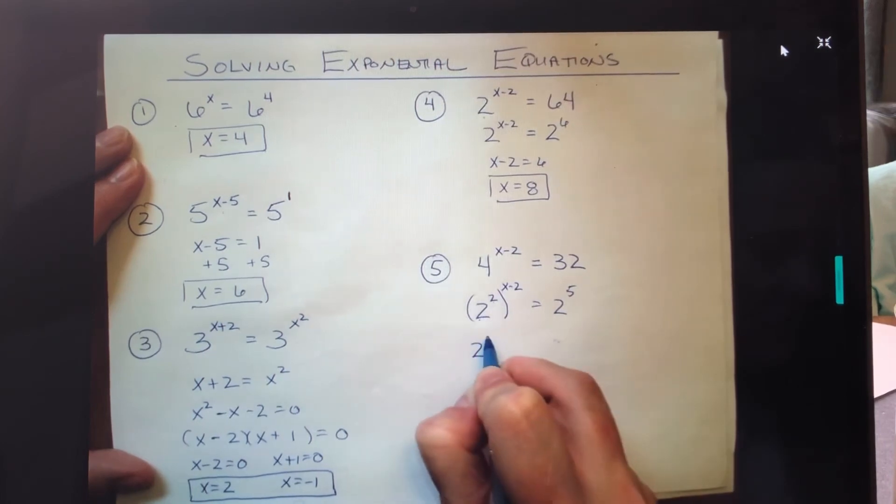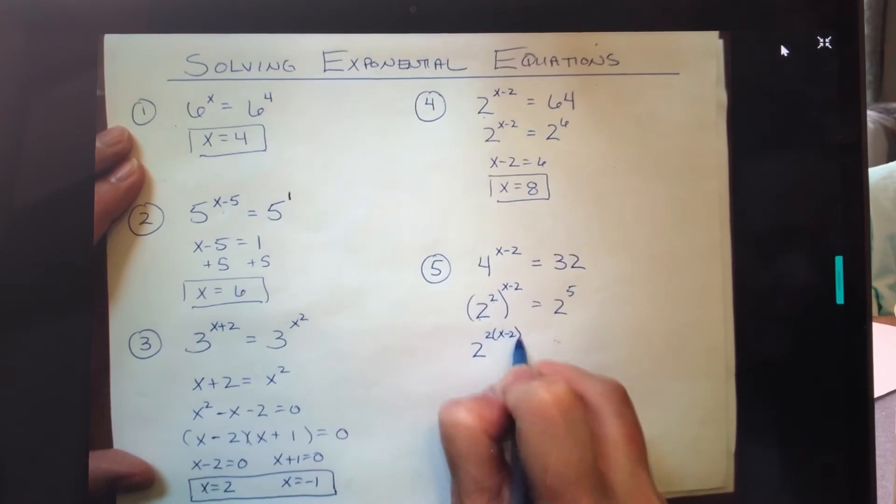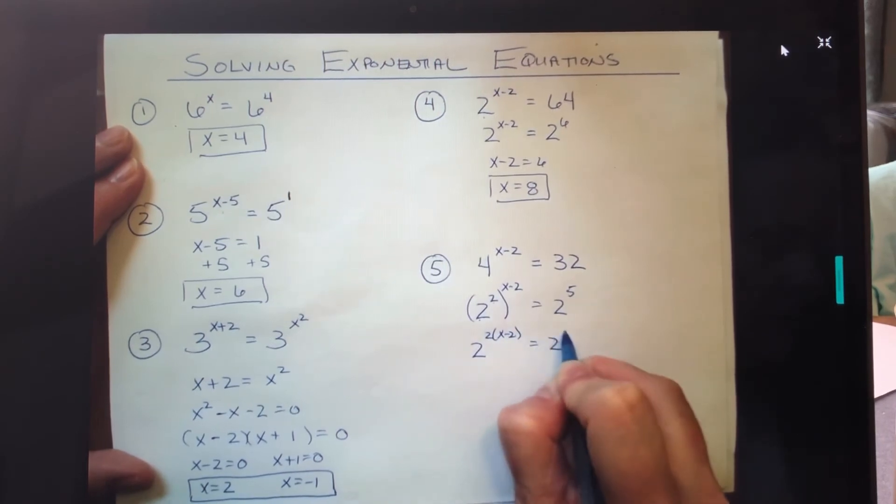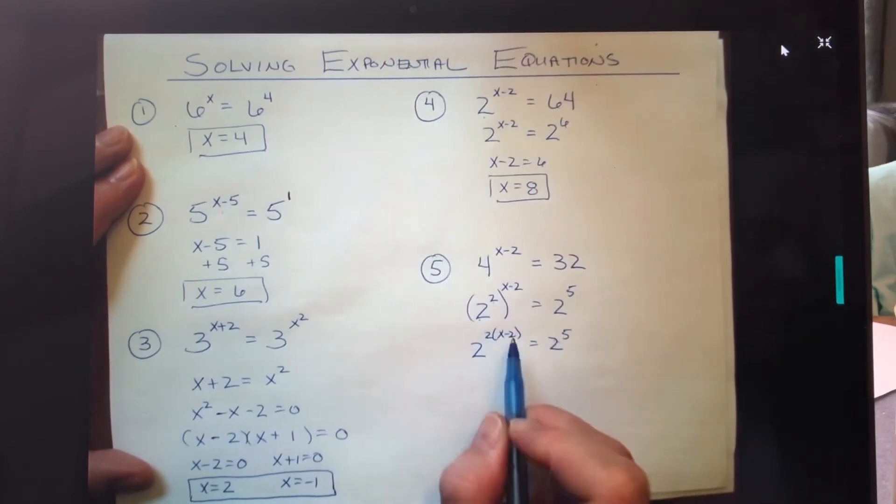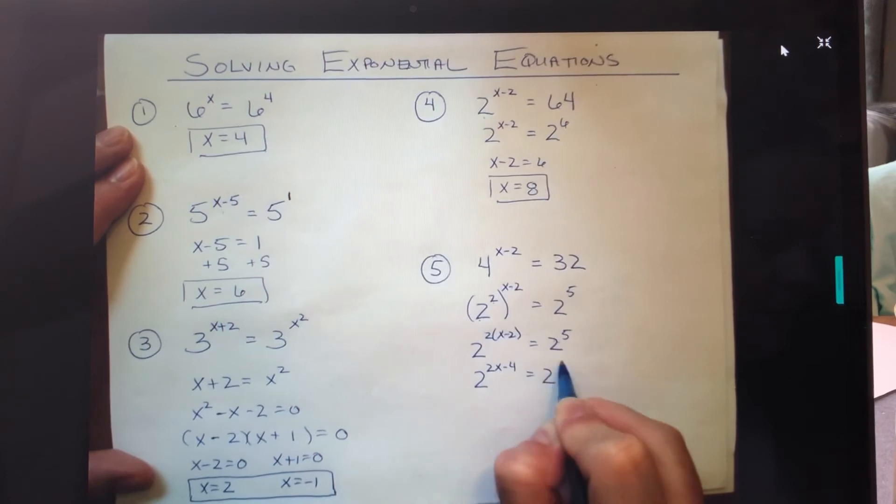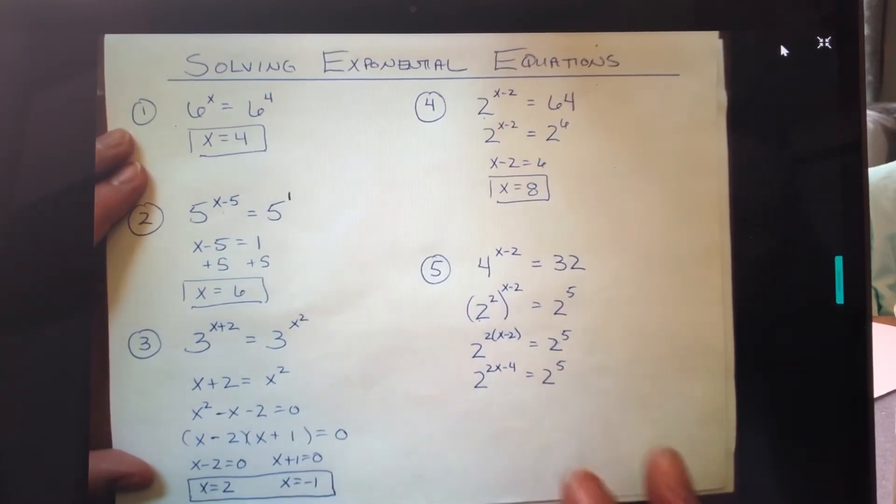I can distribute this 2 through, so that's actually 2 to the 2x minus 4 equals 2 to the fifth. So now this looks one-to-one—same number. Grab those exponents, pull them down, set them equal to each other, and go solve that algebra problem.